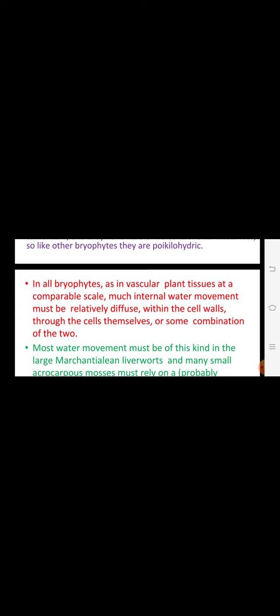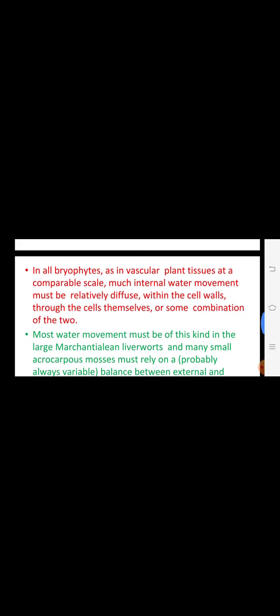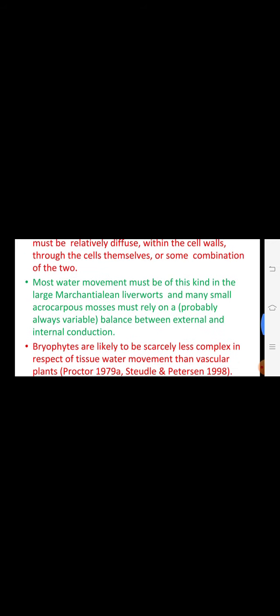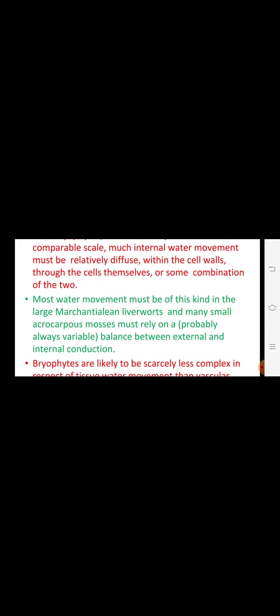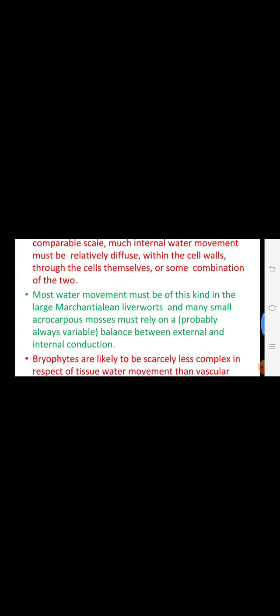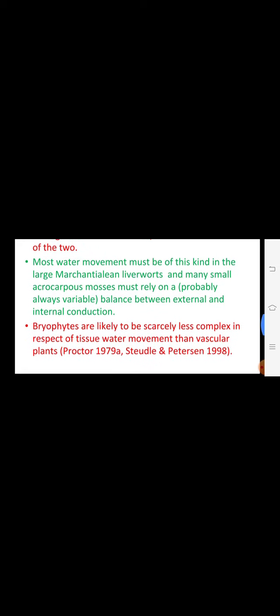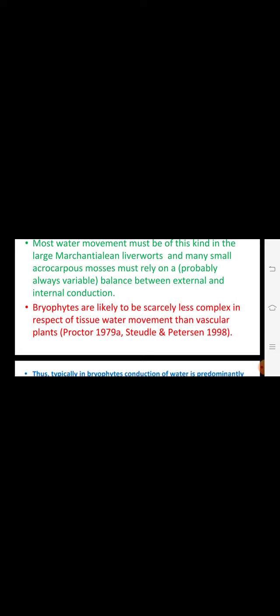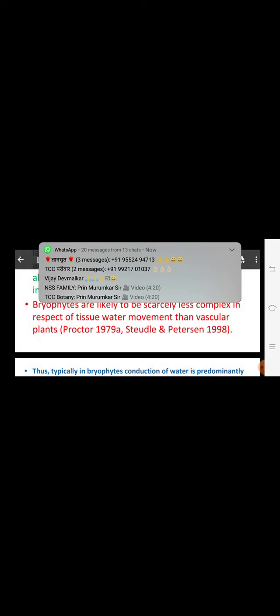In vascular tissues, scales are present — as we know, in Marchantiales scales are present. These scales help provide additional support and aid in regeneration, developing in the next season. Acrocarpous mosses are those where archegonia develop at the top. Liverworts also show external and internal conduction, with archegonia in groups of four in Order Marchantiales.